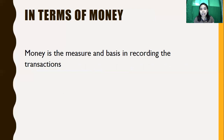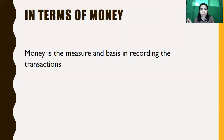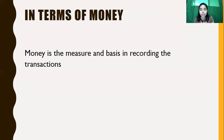In terms of money: money is the measure and basis in recording transactions. In accounting, we measure transactions in terms of money. We cannot just say 'many cash' or 'less receivables' — that is not accounting. We must measure it in terms of money: for example, cash of 100,000 pesos, receivables of 50,000 pesos. That amount is based on the recorded transactions.